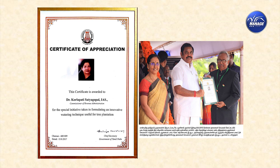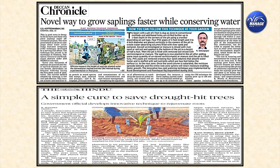The Government of Tamil Nadu recognized this as one of the best practices, and the Honorable Chief Minister instituted an award for it. In 2017, on Independence Day, the Chief Minister presented me this award, and there was wide press coverage. Headlines included: 'Novel way to grow saplings faster while conserving water' and 'A simple cure to save drought-hit trees' — the latter with reference to Tirpur and Coimbatore.